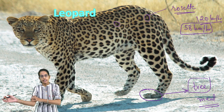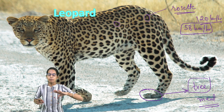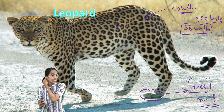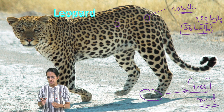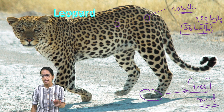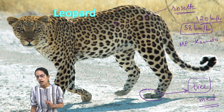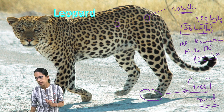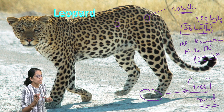Leopard is known as Panthera pardus and belongs to the panthera family — a major difference from cheetah. The population of leopard is significantly seen in India, found in regions of Madhya Pradesh, Karnataka, Maharashtra, Tamil Nadu, Kerala and Goa.